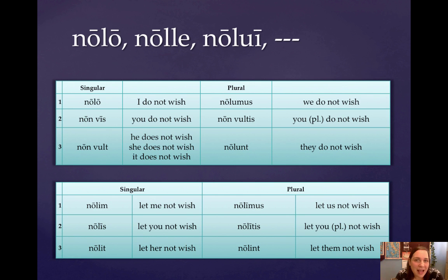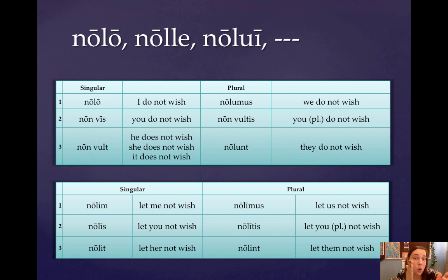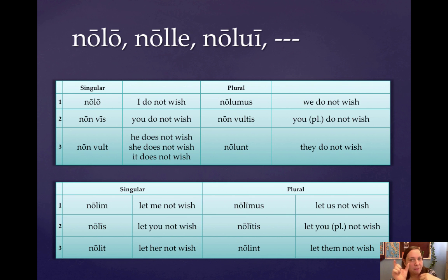Now, nolo, again having that irregular second principal part, nole, is also going to form somewhat irregularly. Notice that some of the forms are going to be just non plus volo — non vis, non vult — but three of them in the present indicative are a combined form. So the present active indicative: nolo, non vis, non vult, nolumus, non vultis, nolunt.